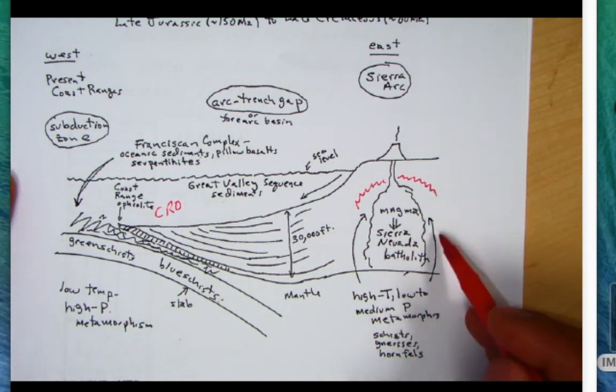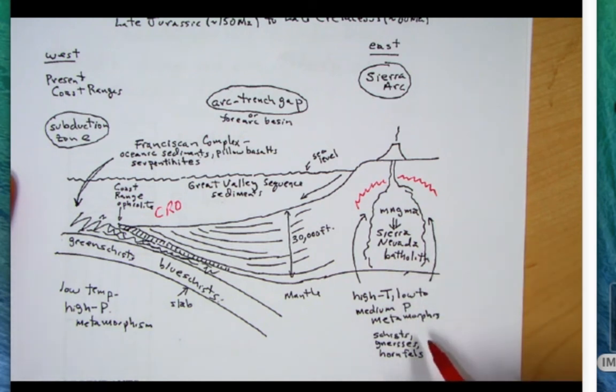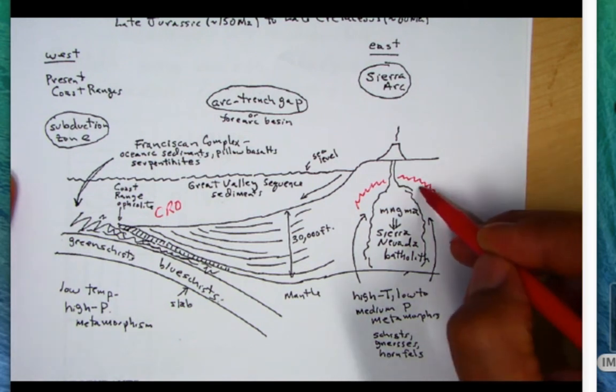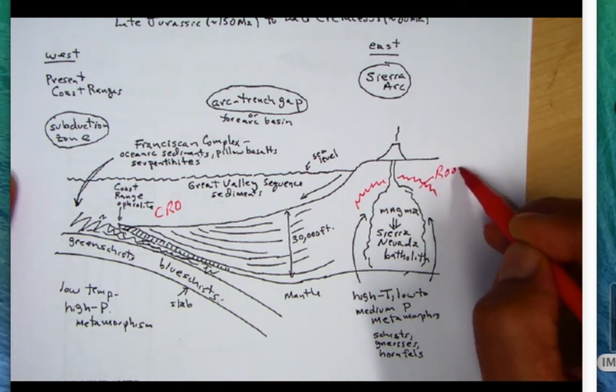The low pressure would be here, the medium pressure would be around the middle here. We're seeing the metamorphic schist, metamorphic gneiss—we'll talk about what a gneiss is—and the hornfels facies. These would be our roof pendants here.